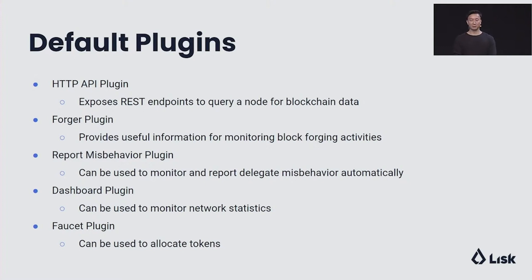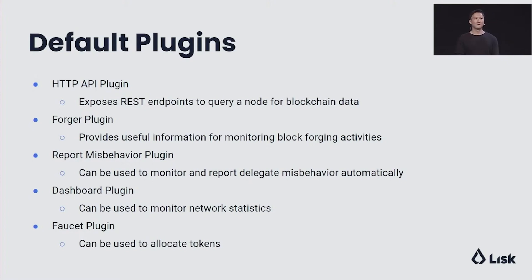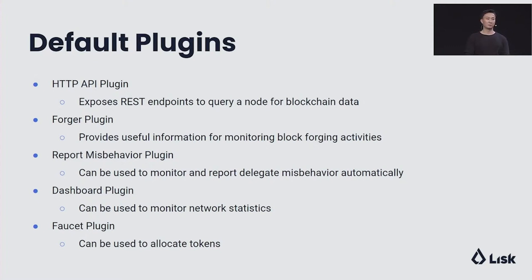The Lisk SDK also comes with a set of default plugins. The first is the HTTP API plugin, which exposes REST endpoints to query a node for blockchain data. Secondly, we have the Forger plugin, which provides useful information for monitoring and block-forging activities. Third, we have the Report Misbehavior plugin, which can be used to monitor and report delegate misbehavior automatically. The last two are new plugins recently developed to enhance the developer experience: the Dashboard plugin, which can be used to monitor network statistics, and the Faucet plugin, which is a convenient way to allocate tokens to various accounts — very useful when testing your blockchain.